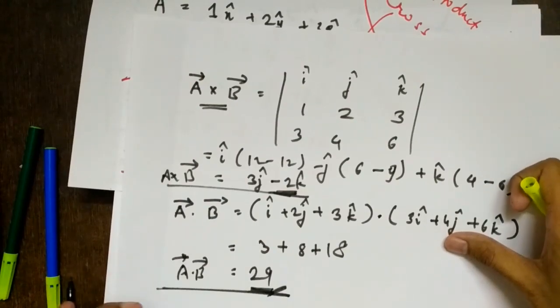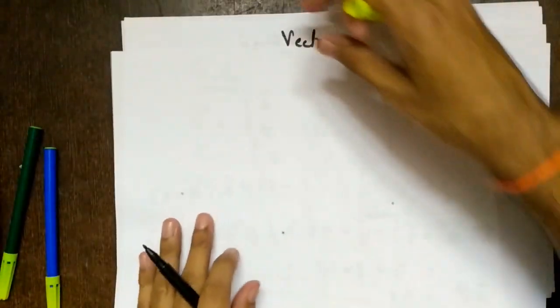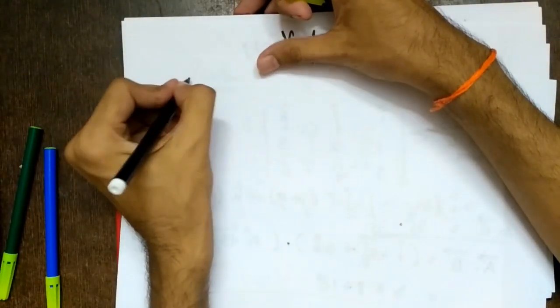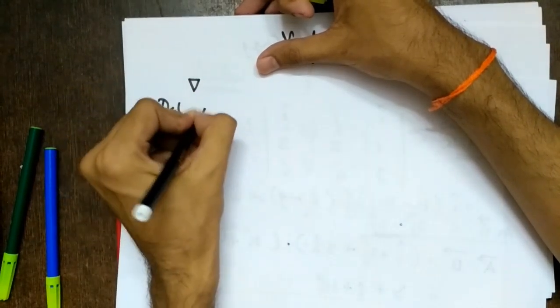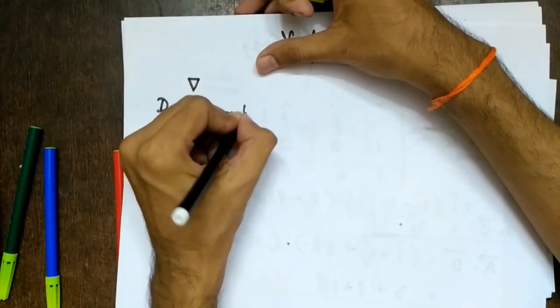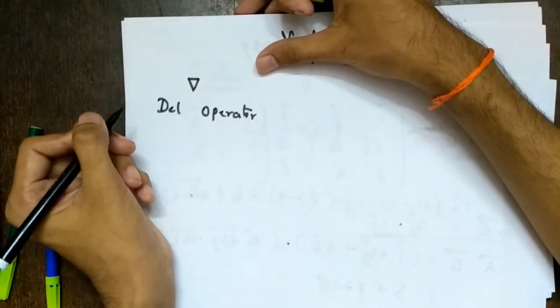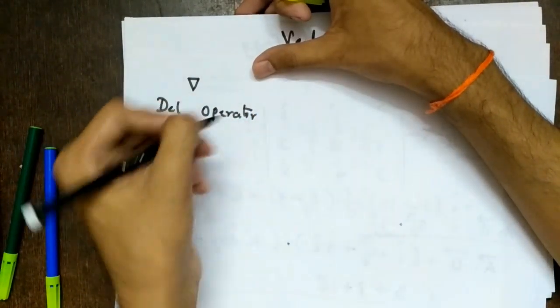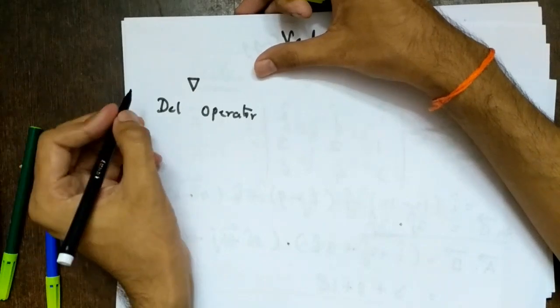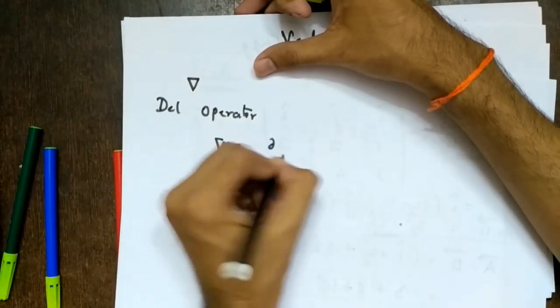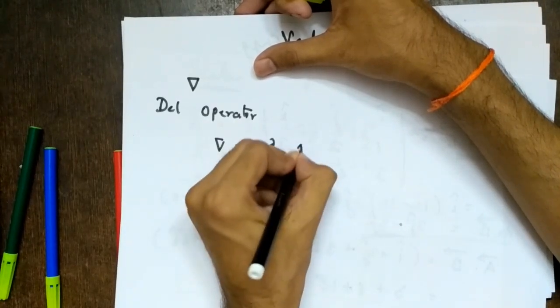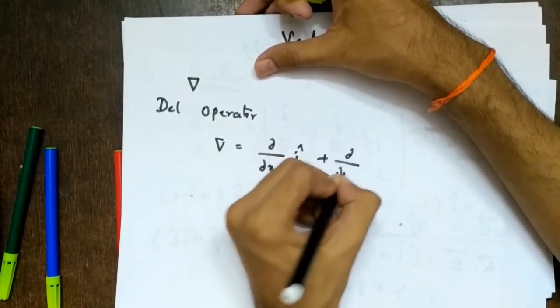The next new thing you may not have studied is the del operator. This is called an operator because it acts on some other vector. The del operator is defined as partial by partial x times i-cap, plus partial by partial y times j-cap, plus partial by partial z times k-cap.